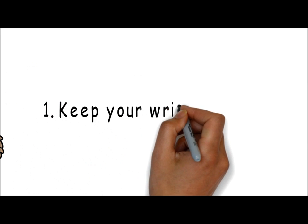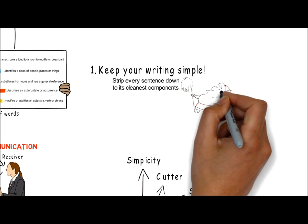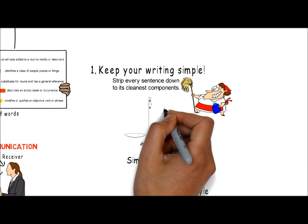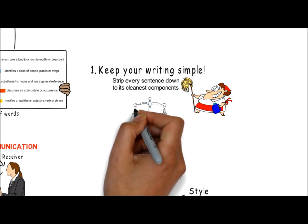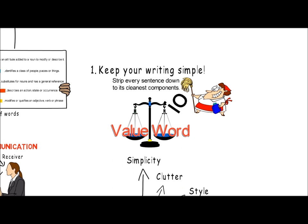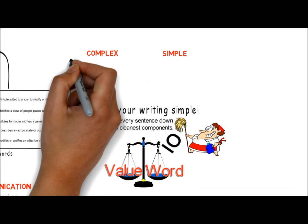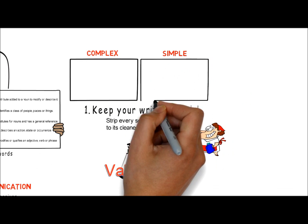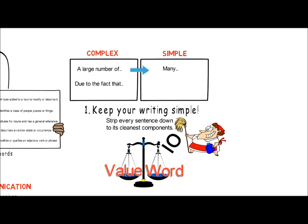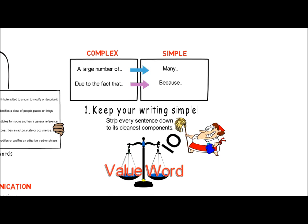The first principle is to keep your writing simple. Zinser recommends stripping every sentence down to its cleanest components. Every word that you include in your writing should contribute to the message that you want to get across. If a word is not pulling its weight in contributing to the message, get rid of it. There is a tendency, particularly in academic styles of writing, to use a complex word or phrase when a simple word would be just as effective. Examples could include 'a large number of' instead of 'many', or 'due to the fact that' instead of 'because'. Continually ask yourself what am I trying to say, and focus your efforts on choosing the best, most economical words to get your point across.